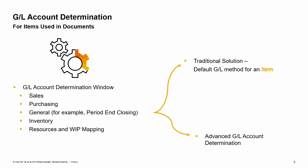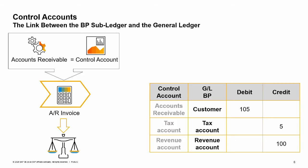We will discuss these options in the default GL accounts unit. It is very important to ensure you make decisions about GL account determination together with the client accountant. In the GL account determination window, you also define the control accounts — accounts receivable for the sales process and accounts payable for the purchasing process. A control account links the business partner subledger accounts to the general ledger.